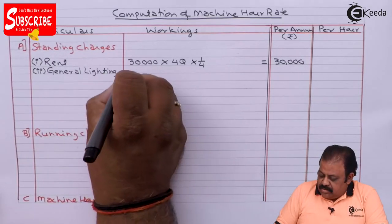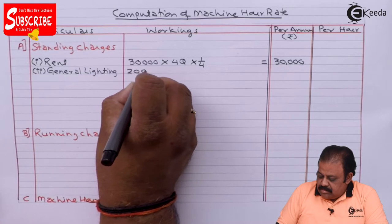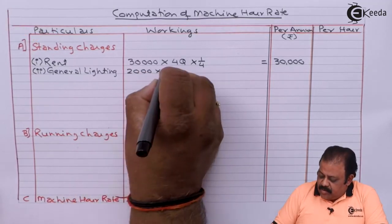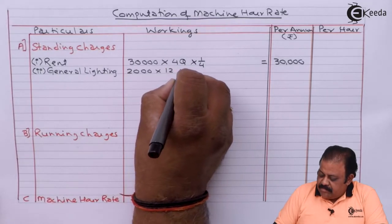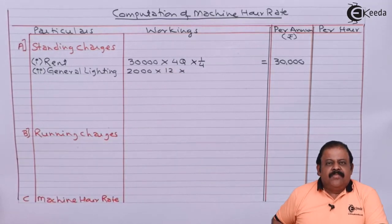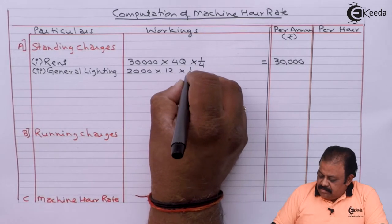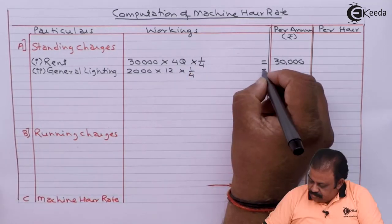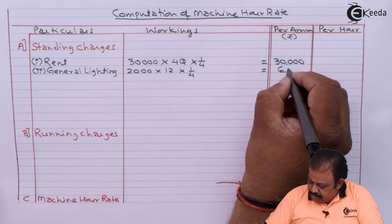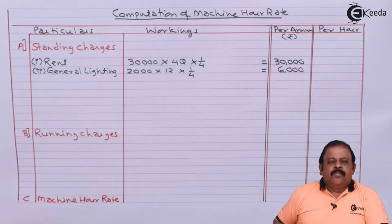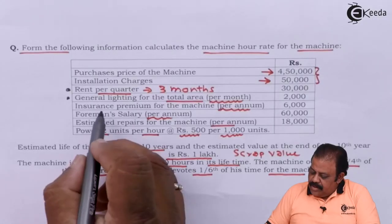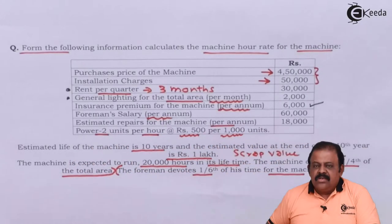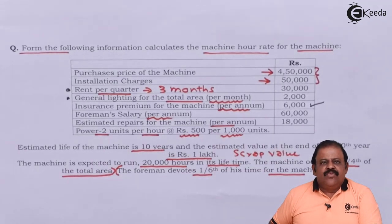Next, general lighting for the total area is 2,000 per month. There are 12 months in a year, so multiply by 12. One-fourth of the area is occupied by the machinery, so multiply by one-fourth. That gives rupees 6,000. Insurance premium for the machine per annum is given as 6,000 for the full year.